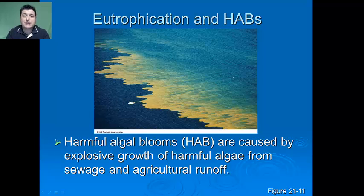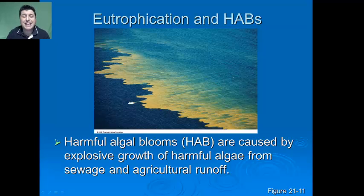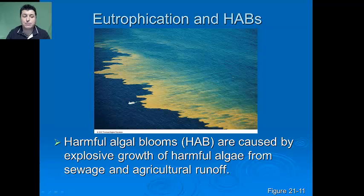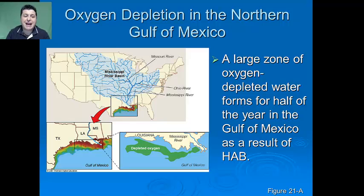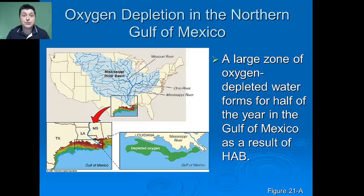In our Gulf of Mexico, the Mississippi River drains 40% of our contiguous United States. All the plant nutrients from fertilizers, residences, and agriculture find their way into the Gulf of Mexico, causing massive algal blooms called HABs — harmful algal blooms. This creates massive dead zones, oxygen-depleted water in the Gulf of Mexico for up to half a year as a result of these major algal blooms. If we can reduce the amount of nitrates and phosphates, we can help protect our coastal waters as well as local lakes and rivers.